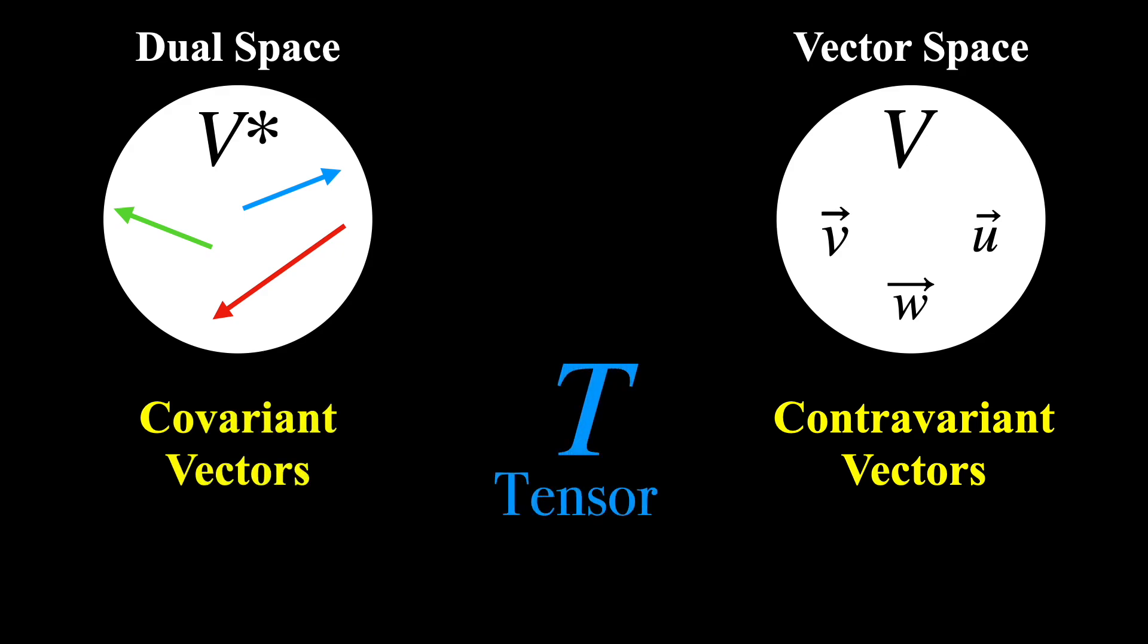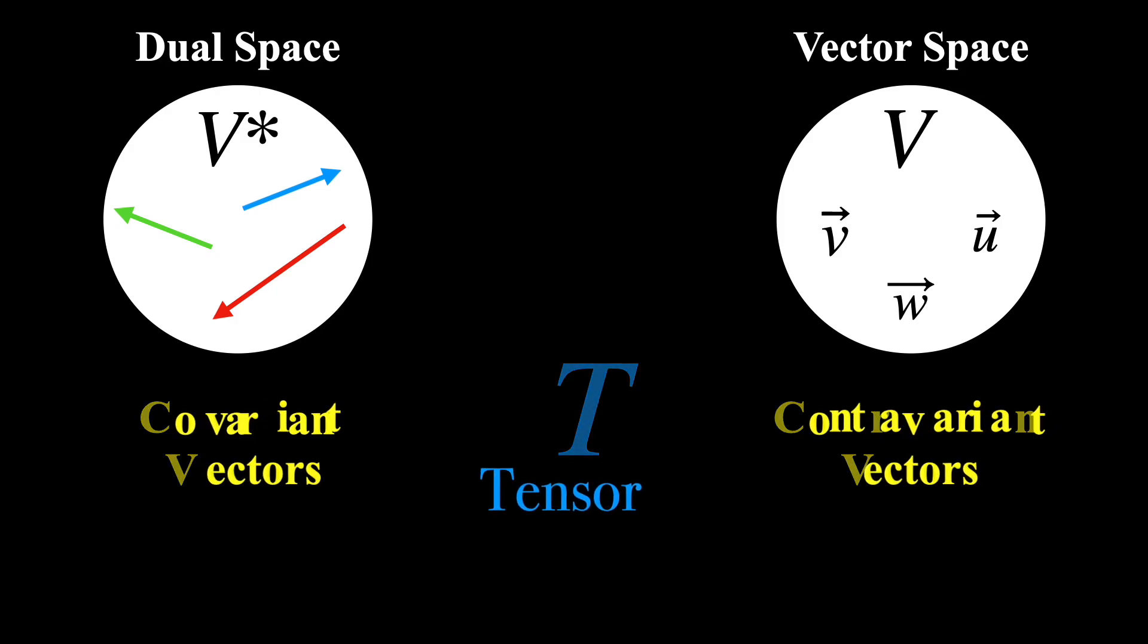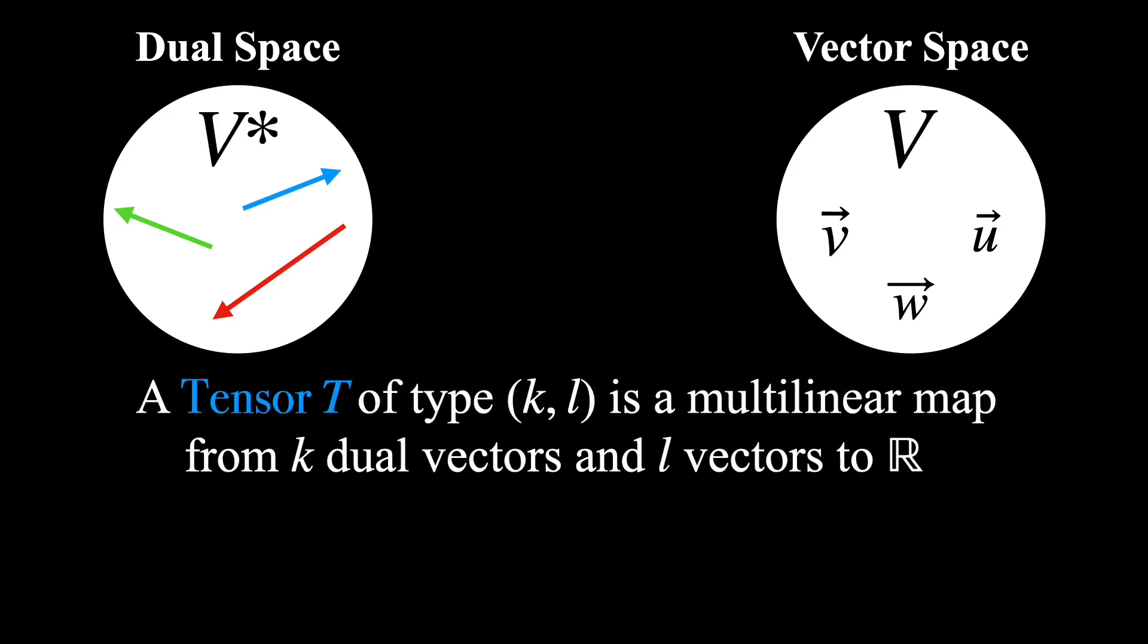Okay, so now we are finally ready to tackle the definition of a tensor. A tensor T of type KL is a multilinear map from K dual vectors and L vectors to the real numbers. Now I know this definition can seem like a headache, but if we break it down piece by piece, it will become crystal clear.